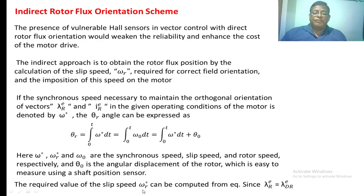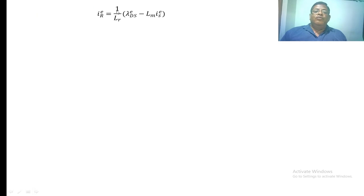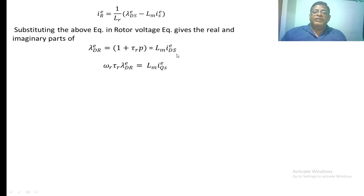The required value of slip speed omega_r_star can be computed from the equation lambda_r_e = lambda_dr_e. We know that i_r_e = (1/L_r)(lambda_ds_e - L_m * i_s_e). Substituting this into the rotor voltage equation and separating the real and imaginary terms, we get: (1 + tau_r * p) * lambda_dr_e = L_m * i_ds_e, and omega_r * tau_r * lambda_dr_e = L_m * i_qs_e.